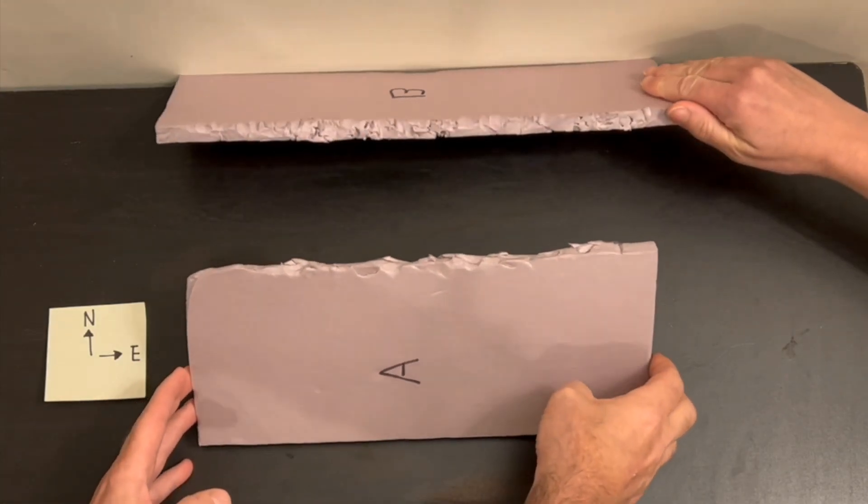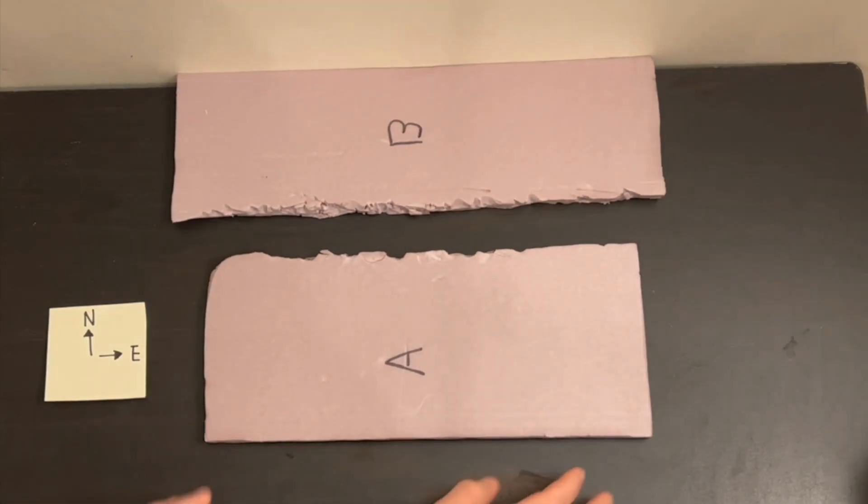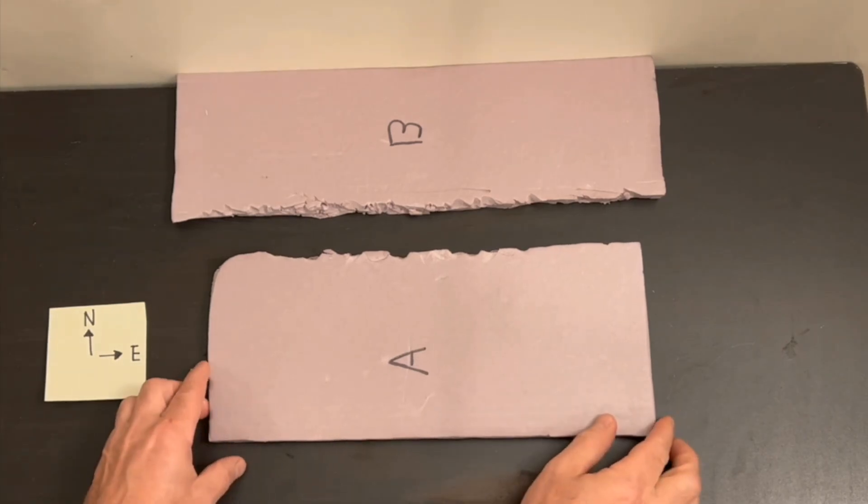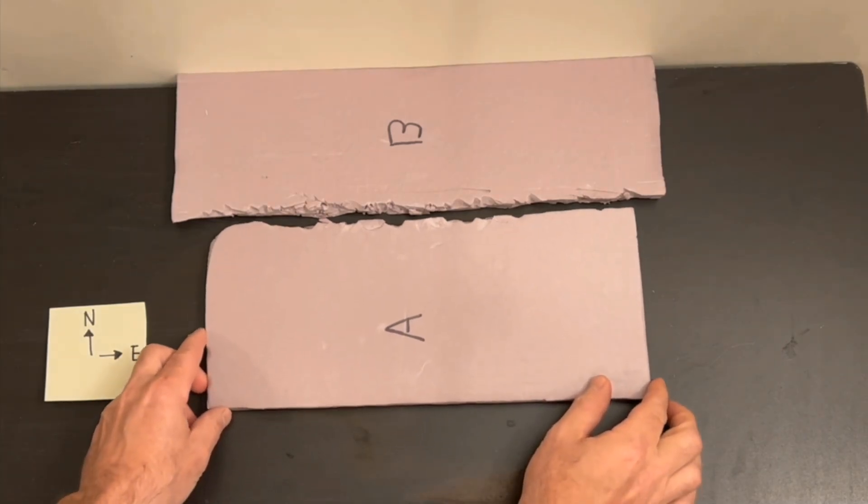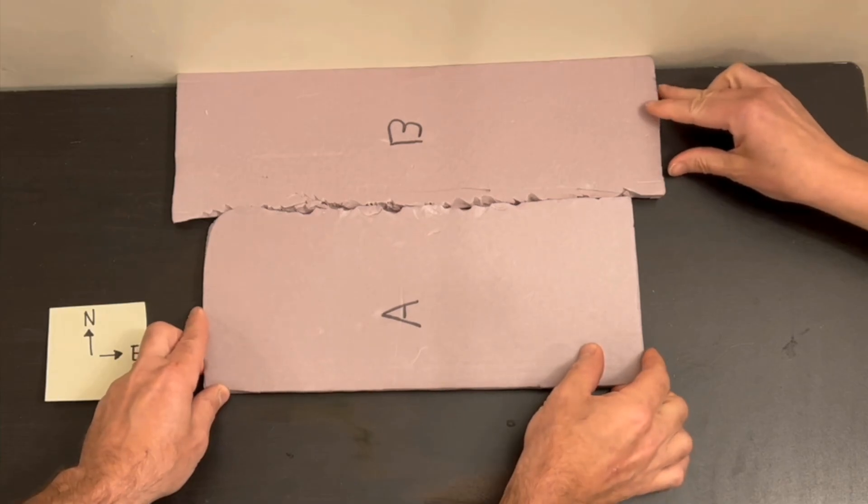There is variation in the shape along the edges of the foam where they will be in contact. We will try to move Plate A very slowly to the north and Plate B very slowly to the west.